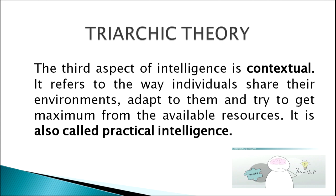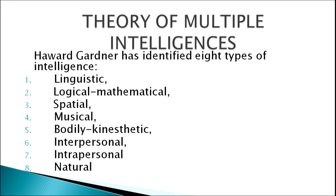Howard Gardner proposed the theory of multiple intelligences, holding that individuals possess eight types of intelligence: linguistic, logical or mathematical, spatial, musical, bodily kinesthetic, intrapersonal, interpersonal, and naturalistic.